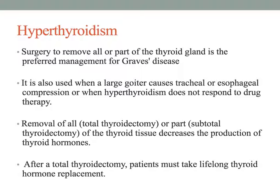Some hyperthyroid patients may require treatment for tachycardia, palpitations, and high blood pressure — typically treated with beta blockers to slow the heart rate and decrease blood pressure. We must ensure the patient doesn't become so hypertensive or tachycardic that they go into cardiovascular arrest. Depending on the patient's condition, either all or part of the thyroid gland may be removed. After a total thyroidectomy, patients must take lifelong thyroid hormone replacement.